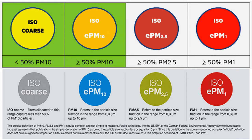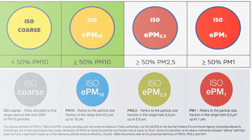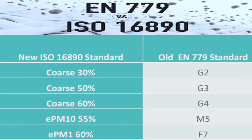Notes: E is the removal efficiency in the particle size range between 50 to 99% removal. Filters with removal efficiencies above 99% are tested to the ISO 29463 range of standards. This table shows the differences between the EN 779 and ISO 16890 standard — for example, Coarse 30% is equivalent to G2 filters. You can refer here for the different filter rating comparisons.